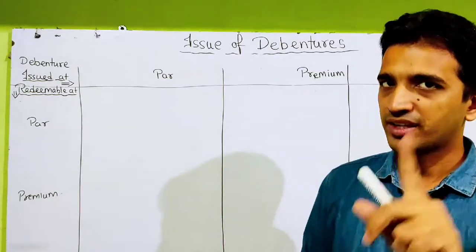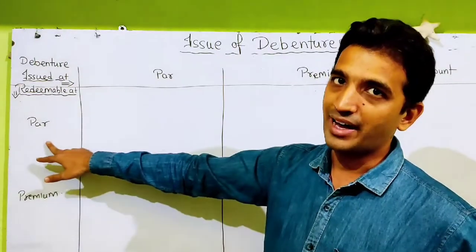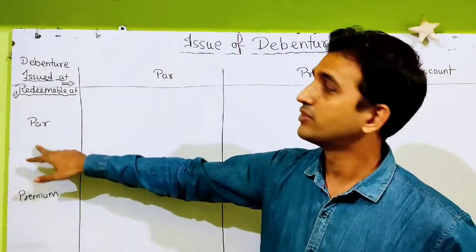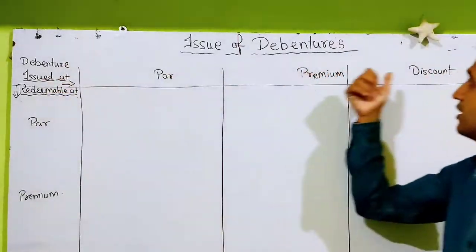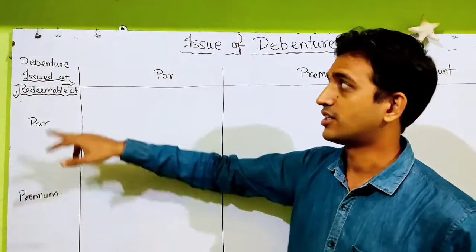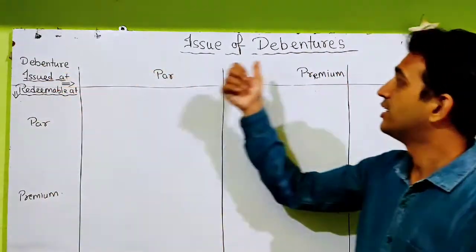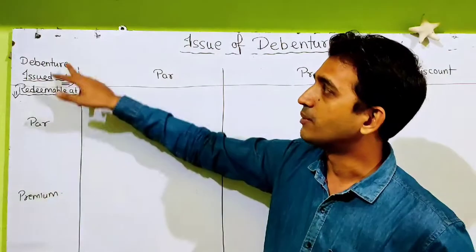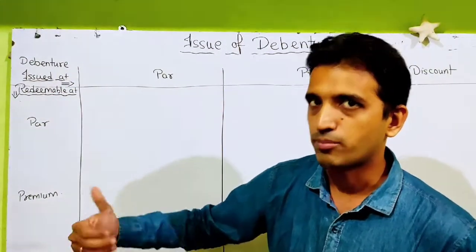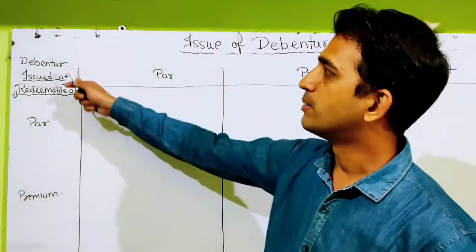तो बच्चो, जो 6 general entries देखने जा रहे हैं — 6 cases में अलग-अलग general entries आप देखने जा रहे हैं. Case 1: Debenture issued at par, redeemable at par. Case 2: Debenture issued at premium, redeemable at par. Case 3: Debenture issued at discount, redeemable at par. Case 4: Debenture issued at par, redeemable at premium. Case 5: Debenture issued at premium, redeemable at premium. Case 6: Debenture issued at discount, redeemable at premium.